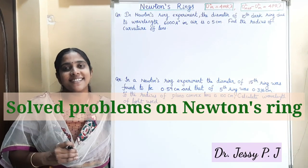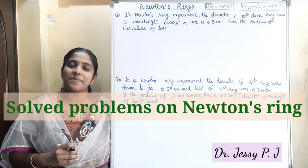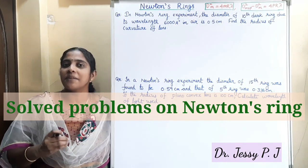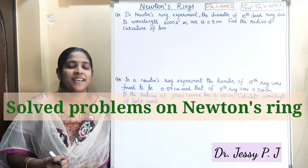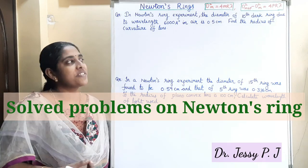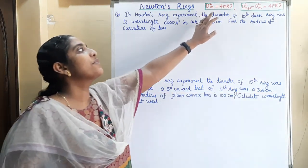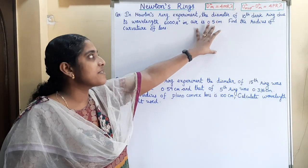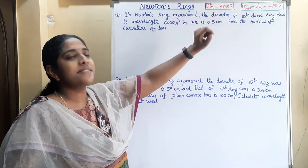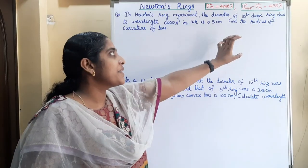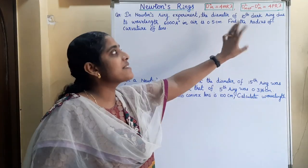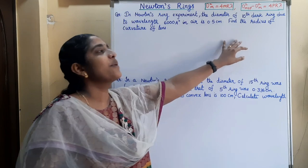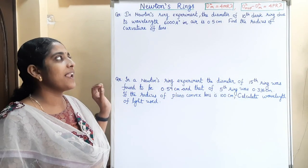Today we can see the numericals based on Newton's ring. In Newton's ring, mainly the problems are based on the diameter of the ring. The diameter expression is d²_m = 4mRλ, where m is the order, R is the radius of curvature of the lens, and λ is the wavelength of light used. If the diameter corresponding to two rings are given, we use the formula d²_(m+p) − d²_m = 4pRλ.